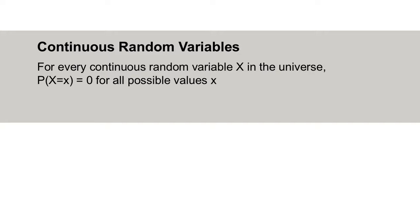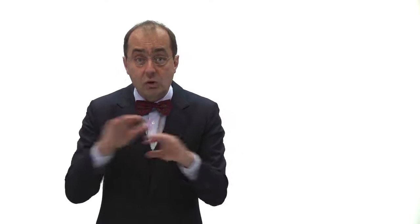Think back to the axioms from the beginning of the course. The probability of every individual number must be zero — or said differently, no individual number can have a positive probability. This is so key that I've made a little theorem out of it: every continuous random variable has the property that the probability of X taking on any specific value x is zero. So we can no longer talk about individual probabilities — that's just nonsensical.